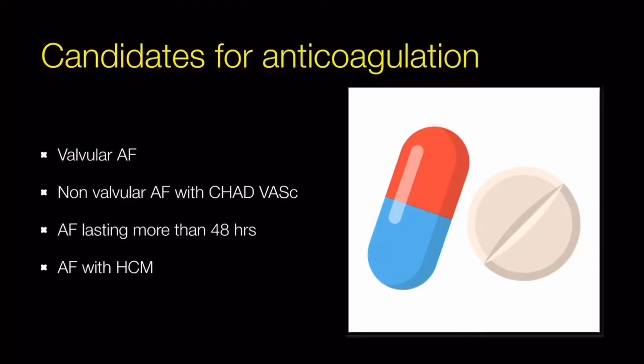Candidates for anticoagulation include: any patient with valvular atrial fibrillation, non-valvular AF with a satisfactory CHA₂DS₂-VASc score, AF lasting more than 48 hours, and AF associated with hypertrophic cardiomyopathy. In all these cases, we must start anticoagulation.